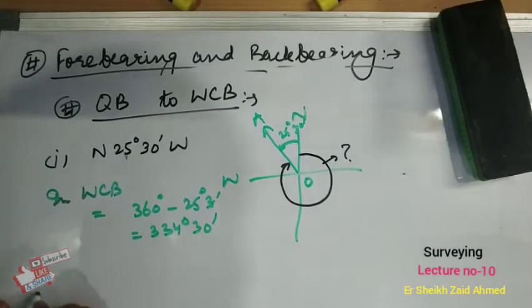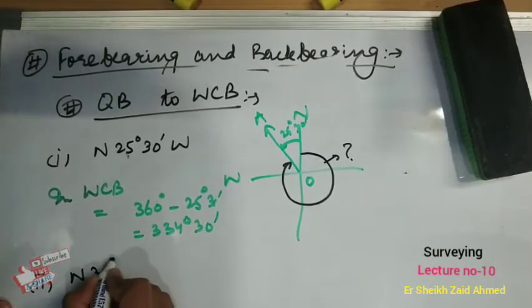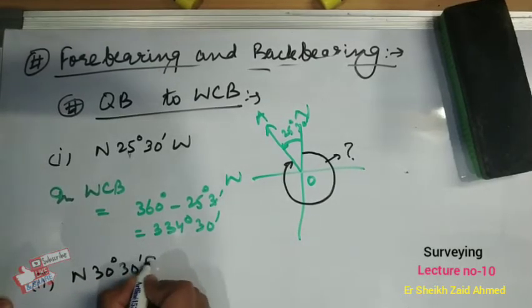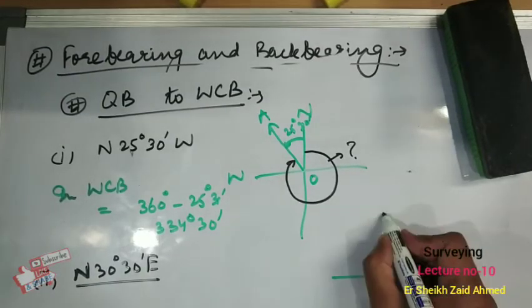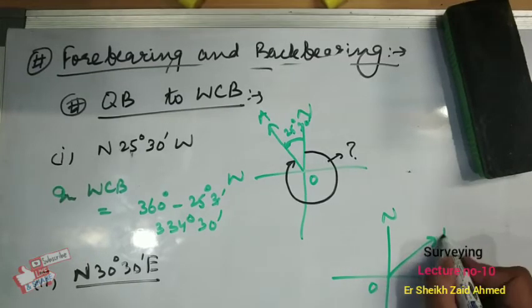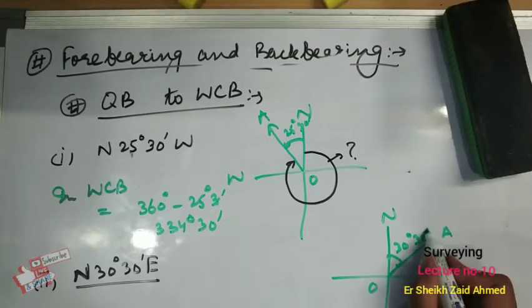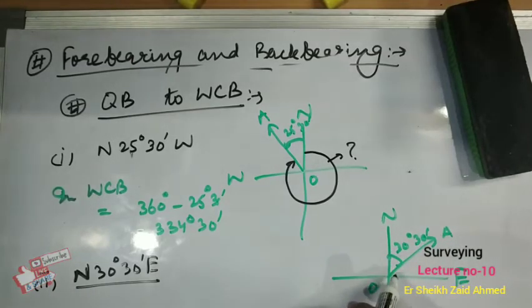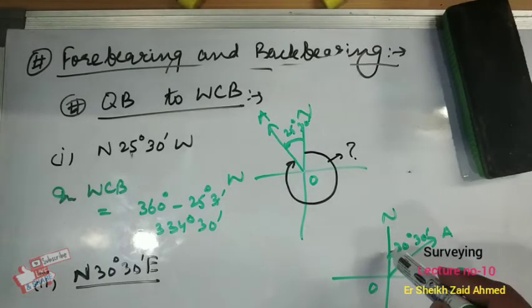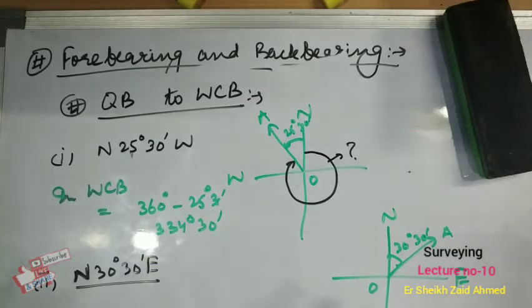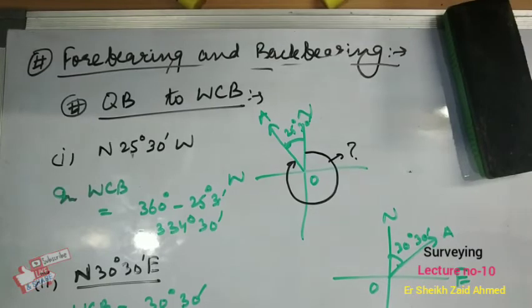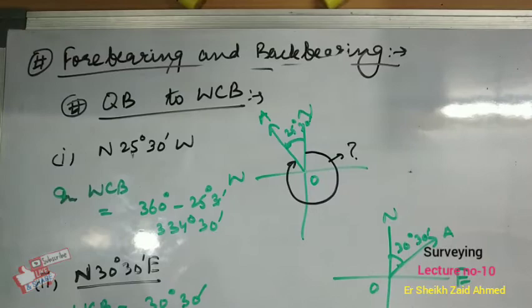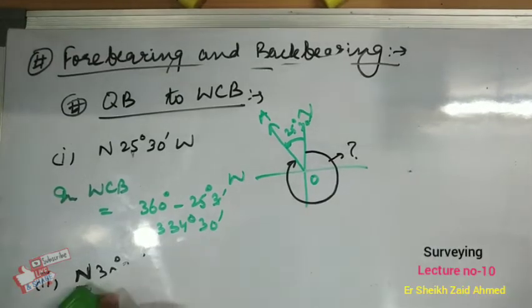The second part is North 30 degrees 30 minutes East. Since this is measured clockwise from north and is in the northeast direction, the whole circle bearing is numerically the same. So the WCB is simply 30 degrees 30 minutes. These were some questions related to conversion between whole circle bearing and quadrantal bearing.